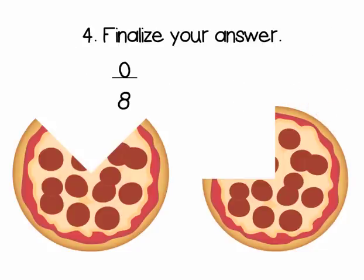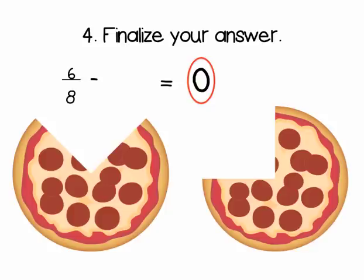The last step is to finalize our answer. We know that 0 eighths isn't really a fraction, but it's equal to 0. Therefore, the answer to the problem 6 eighths minus 3 fourths is 0.